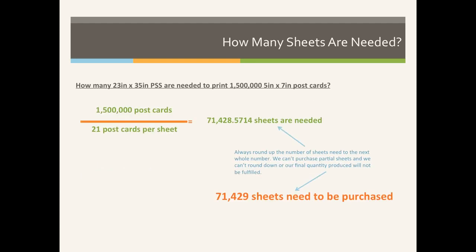So if we take our original example, we're printing 1,500,000 postcards and we can get 21 out per sheet. 1,500,000 divided by 21 out per sheet equals 71,428.5714 sheets. We always round the number of sheets up to the next whole number, no matter what it is, because if we were to purchase 71,428 sheets, we would be short on our overall quantity — we may only be able to print 1,499,980 postcards instead of the 1,500,000 that we need.